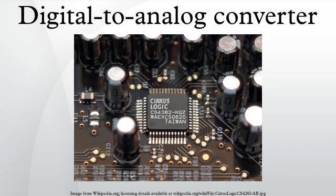An unusual application of digital-to-analog conversion was the Whiffletree electromechanical digital-to-analog converter linkage in the IBM Selectric typewriter. The most common types of electronic DACs include the pulse width modulator, the simplest DAC type. A stable current or voltage is switched into a low-pass analog filter with a duration determined by the digital input code. This technique is often used for electric motor speed control, but has many other applications as well.